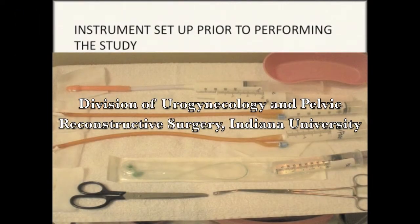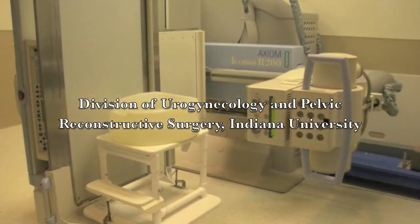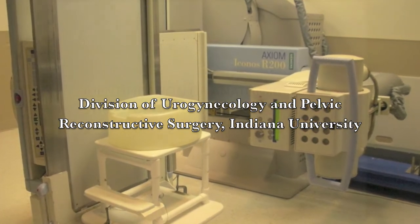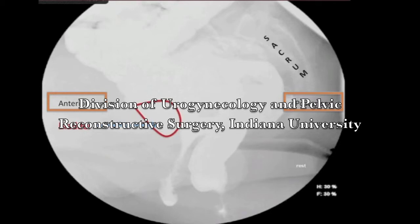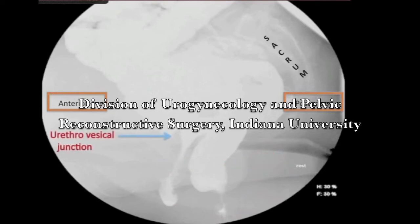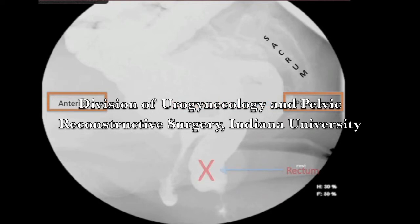This image shows all the instruments needed to perform the DCP. The patient is then seated on a commode in the fluoroscopy suite. It is important to identify the anatomic structures before performing the DCP. This is a sagittal view of a patient seated on the DCP commode. The vagina and the bladder are easily identified, along with the catheter placed in the bladder and the urethrovesical junction. The area with contrast coming out of the vagina corresponds to the vaginal introitus. The bowel structures identified include the small bowel, sigmoid colon, rectum, anal canal, and the anorectal junction.